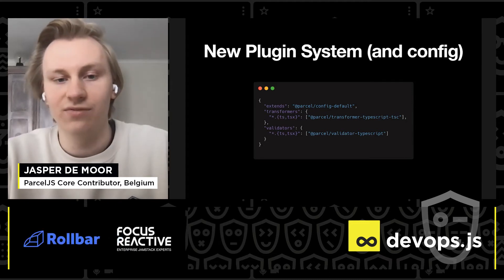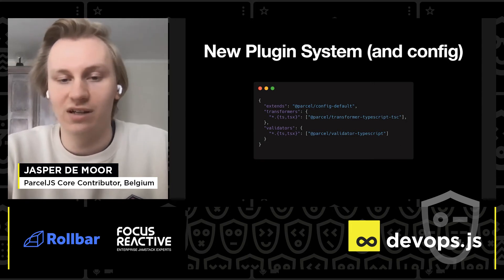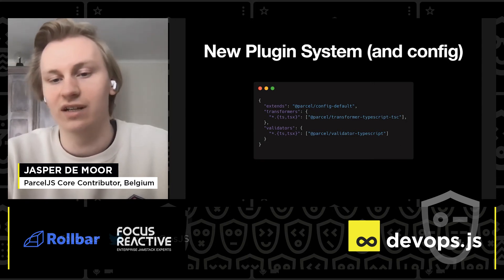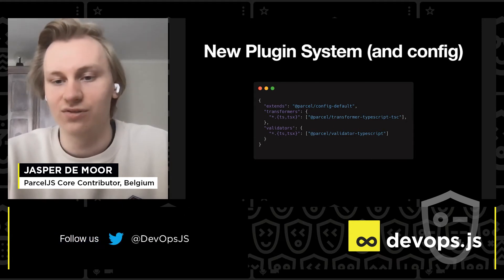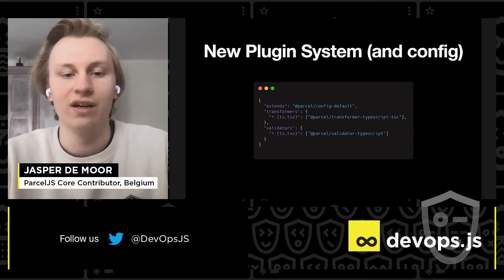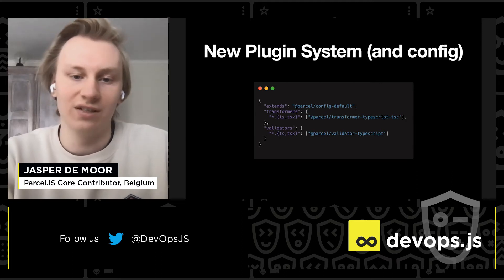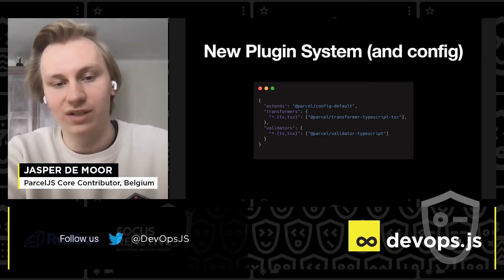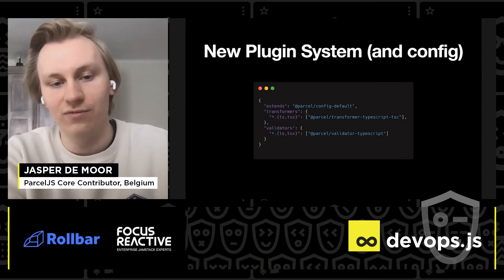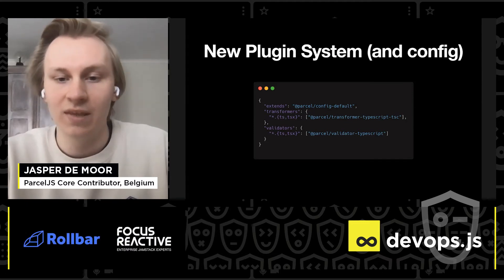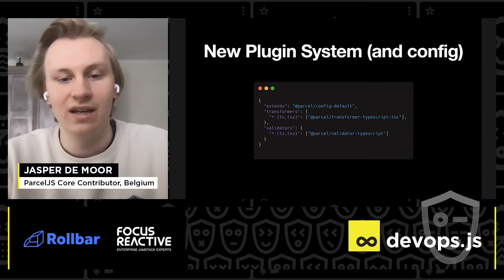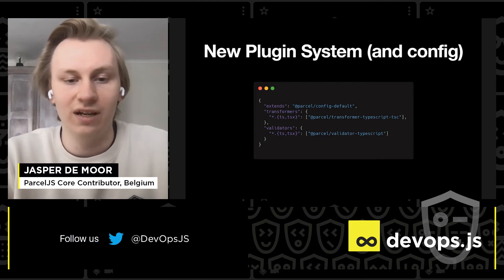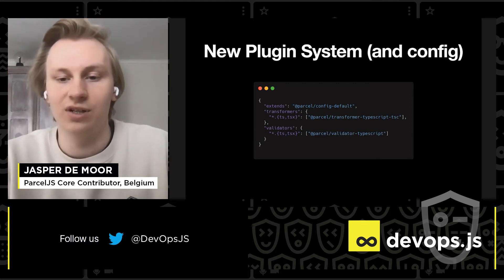We've also added a config file in Parcel 2. The config file isn't used to configure anything specific in a transformer or plugin — it's used to define which plugins should run for a certain file type. For example, this is a TypeScript example where for TS and TSX files, the transformer that runs is the TypeScript TSC compiler instead of Babel. And for a validator, we also run a type checker.